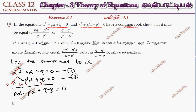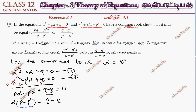We get: p·alpha minus p'·alpha plus q minus q' = 0. So alpha is equal to (q' - q) divided by (p - p').